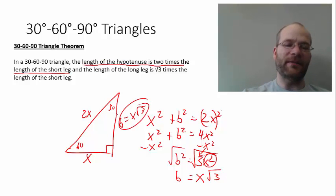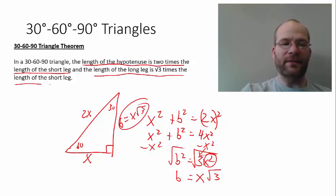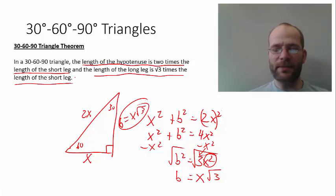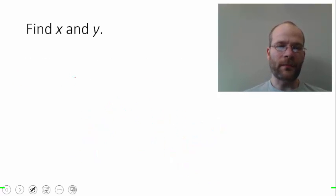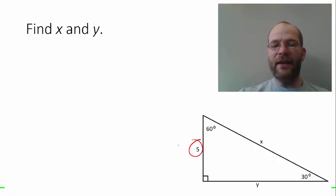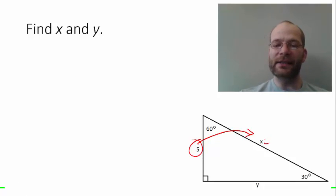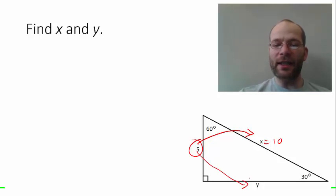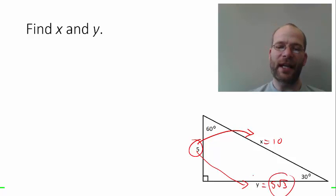That is the second part of the rule: the length of the long leg is square root of 3 times the length of the short leg. In the first example, the short leg is 5, so we double it to get the hypotenuse: x equals 10. We multiply the short leg by square root of 3 to get the long leg: y equals 5 square root of 3.